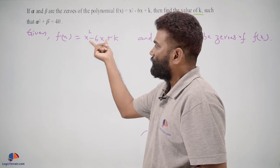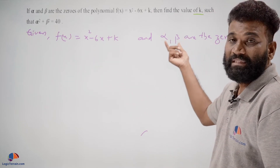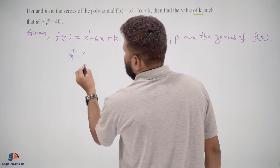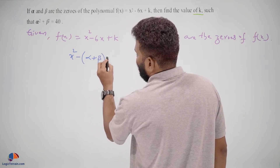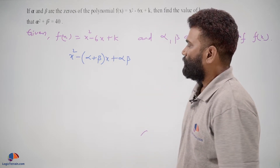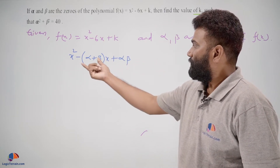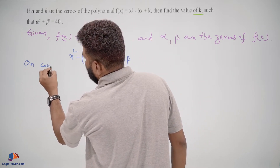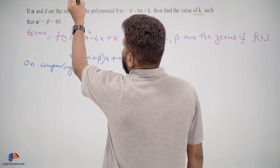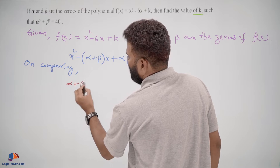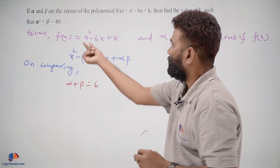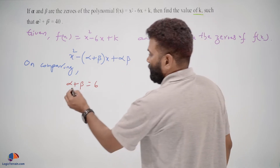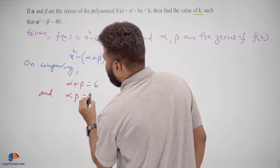When we compare this quadratic polynomial with the standard form using sum and product of zeros formula — x² - (alpha + beta)x + (alpha × beta) — on comparing these two, we get alpha + beta = 6 and alpha × beta = k.